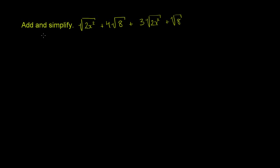We're asked to add and simplify. We have the principal root of 2x squared plus 4 times the principal root of 8, plus 3 times the principal root of 2x squared plus the principal root of 8. We could simplify first and then add, or we could add first and then simplify. But it looks like we can already add, so let's try to do that.